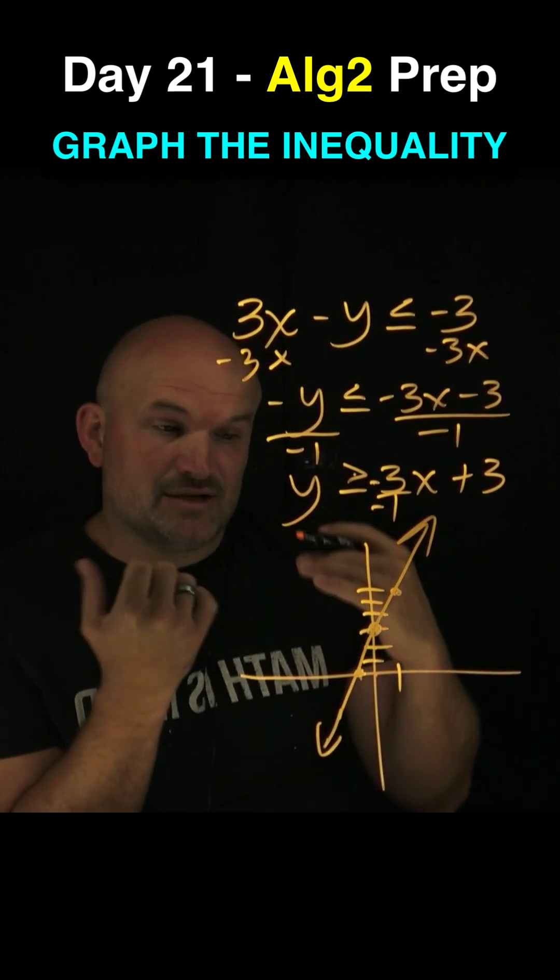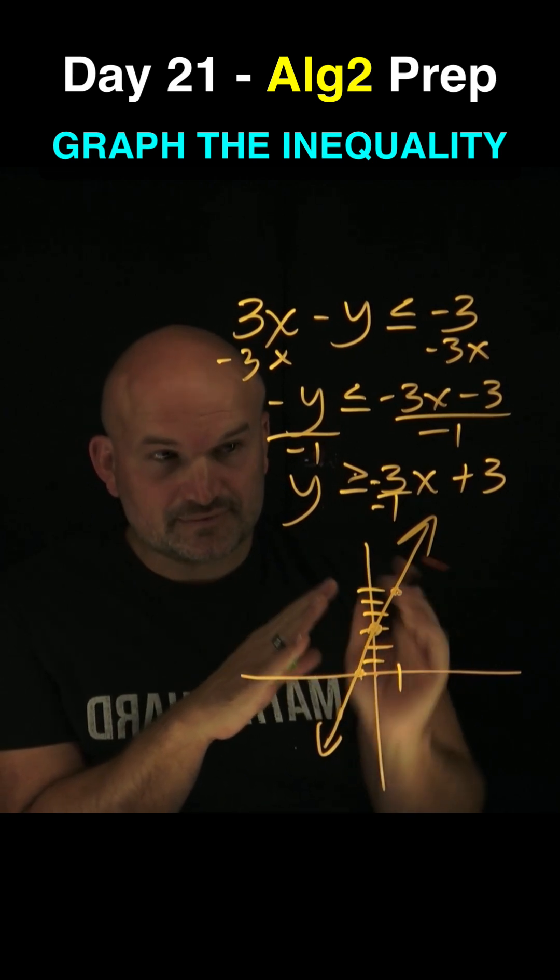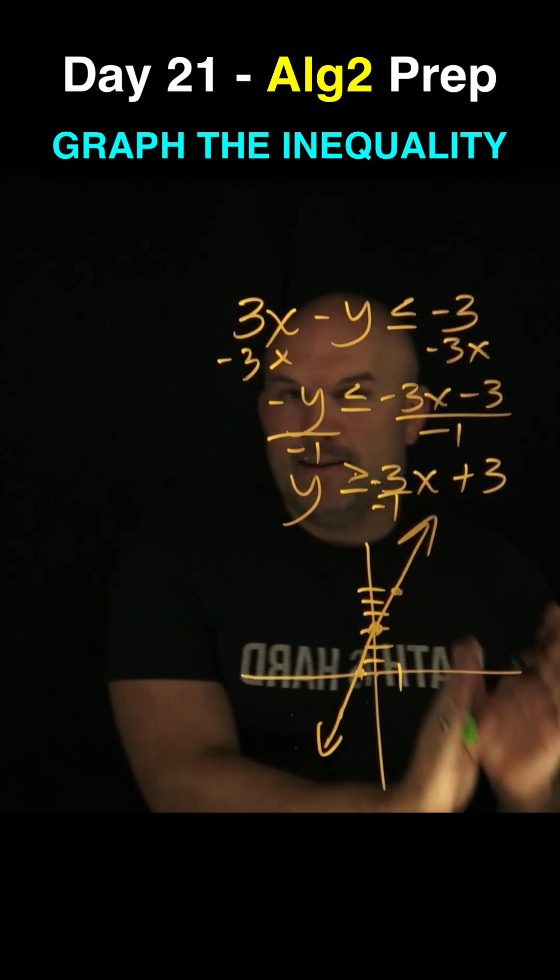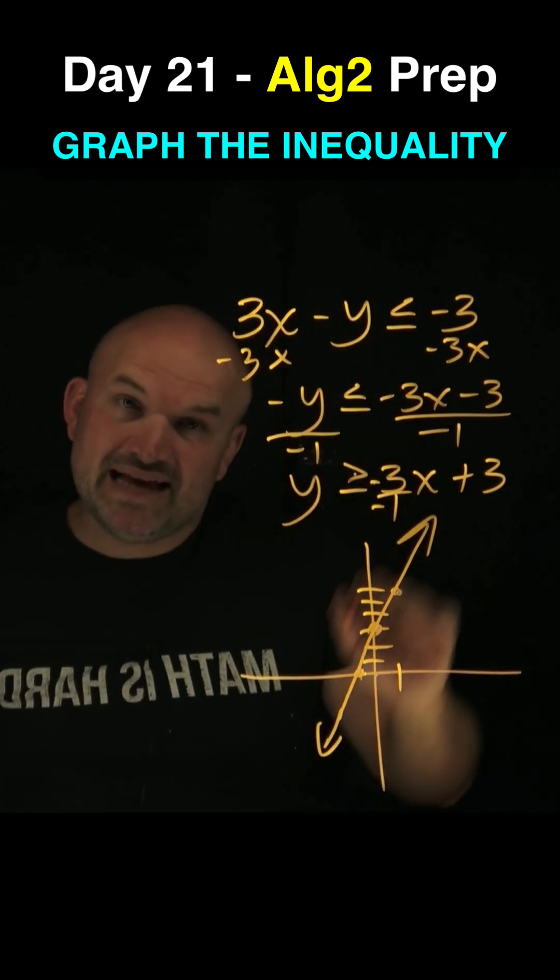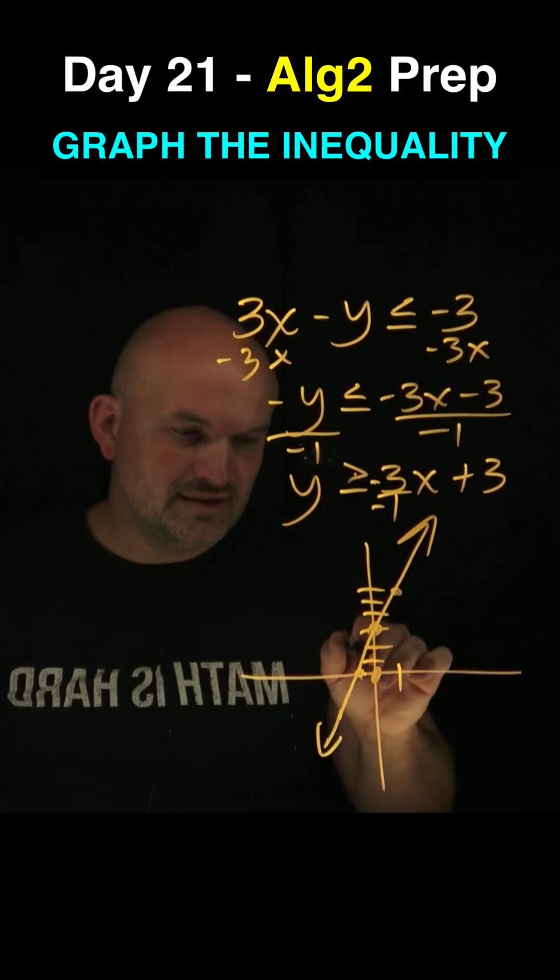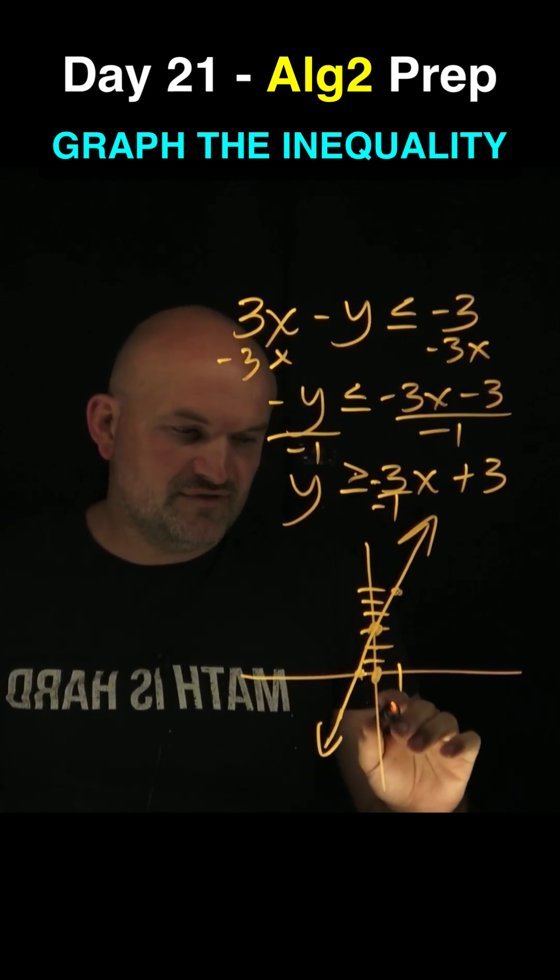The last thing we need to do is be able to test where all the values that make this inequality true are. Are those going to be above the line? Are they going to be below the line? We know they can be on the line because that is equal to. So the easiest thing to do is go ahead and create a test point, 0, 0.